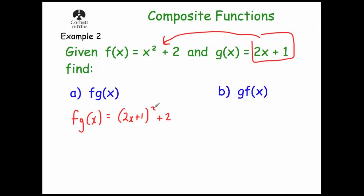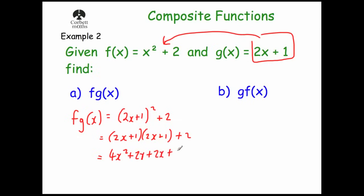Now we need to expand this. We write the bracket out twice: 2x plus 1, 2x plus 1, and then plus 2 on the end. Using FOIL to expand, we get 4x squared plus 2x plus 2x plus 1, and then plus 2 on the end. So fg of x equals 4x squared plus 4x plus 3. That's our composite function fg of x.